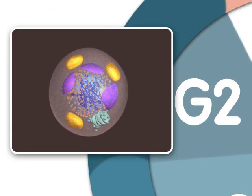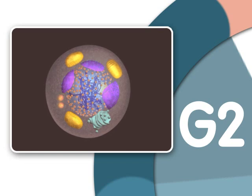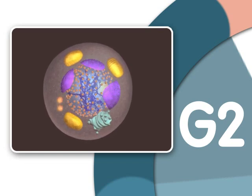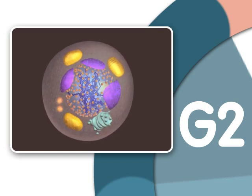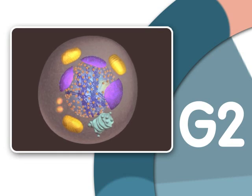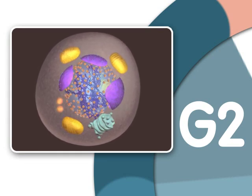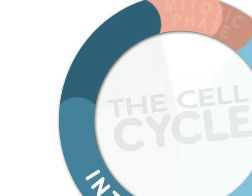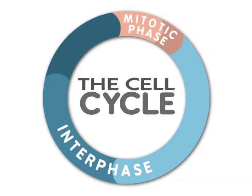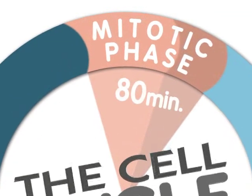The cell next enters another growth stage called G2, or GAP2. It is during G2 that the cell finishes growing. Once the cell has duplicated DNA in the nucleus and two centrosomes have appeared in the cytoplasm, mitosis can begin. For a typical eukaryotic cell, this will last about 80 minutes.